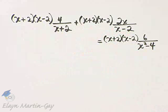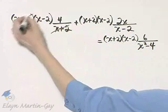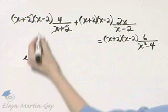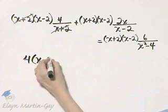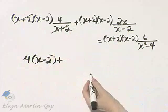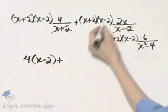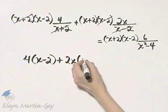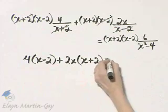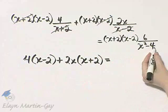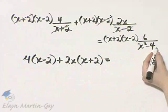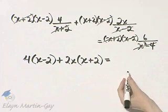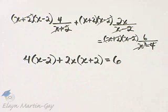And now let me go ahead and divide out common factors. I can divide out these common factors. And notice what I have. I have 4 times (x-2) and then plus. Now let's see what happens next. These common factors divide out. And I have 2x times (x+2) is equal to. Now if you factor x² - 4, it factors as (x+2) times (x-2). So this does divide out with those two factors. And I have simply 6.